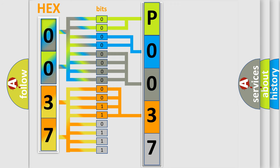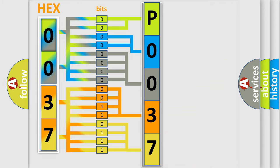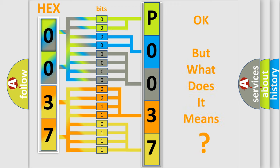A single byte conceals 256 possible combinations. We now know in what way the diagnostic tool translates the received information into a more comprehensible format. The number itself does not make sense to us if we cannot assign information about what it actually expresses.